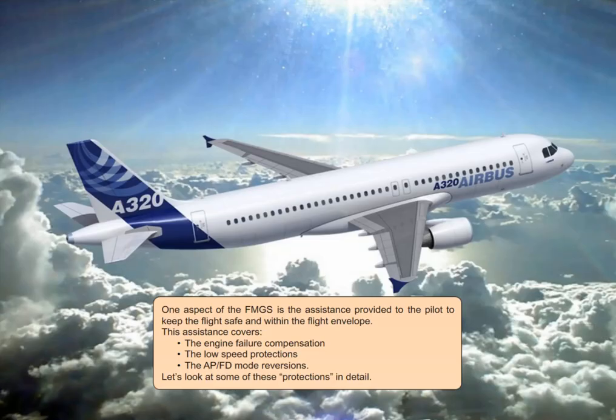One aspect of the FMGS is the assistance provided to the pilot to keep the flight safe and within the flight envelope. This assistance covers the engine failure compensation, the low speed protections, and the autopilot flight director mode reversions. Let's look at some of these protections in detail.